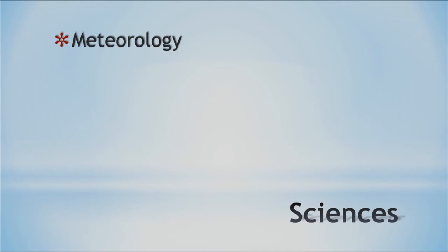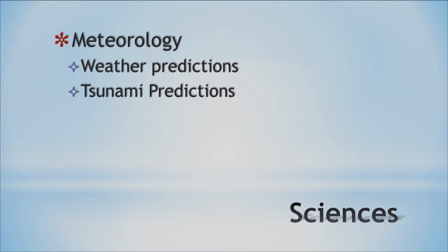Meteorology uses computers for predicting different weather events. They use this to predict weather, make tsunami predictions, and recently tracked hurricanes threatening the islands — using computers to analyze data and figure out what path the storms would take. Computers give us these warnings and help greatly to forewarn us about natural disasters.